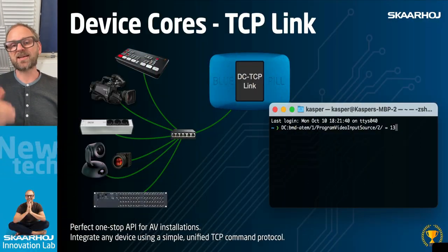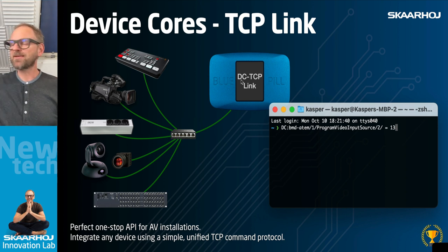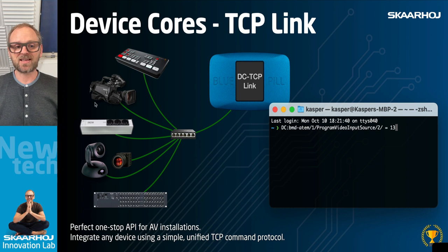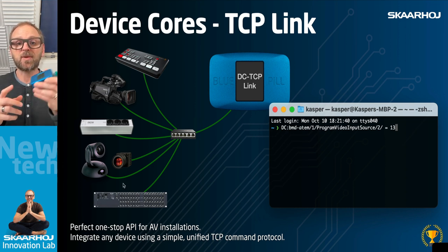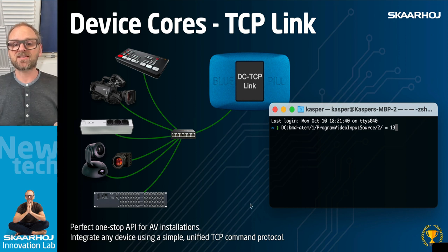Device Core Link is an application that allows you to take any broadcast device like an ATEM switcher, cameras, NetIO, power sockets, PDC cameras, video routers — all these devices that we already support on the BluePill for our panels — and break them out in a simple TCP-based interface.